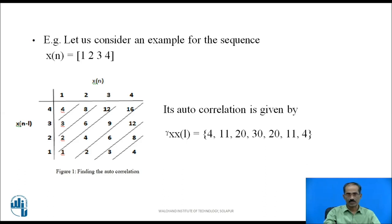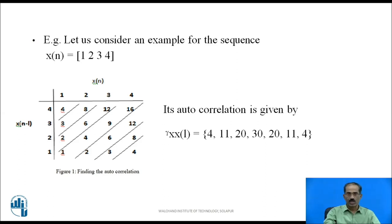Looking at the result r_xx[l], the value 30 is the central (middle) element. With respect to 30, the sequence is symmetrical — the autocorrelation sequence is symmetric about its central element.